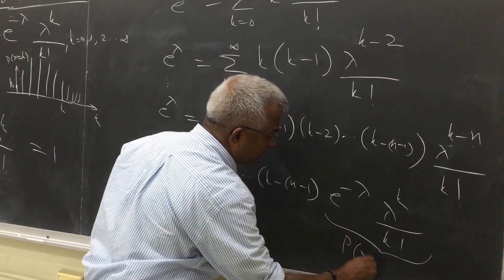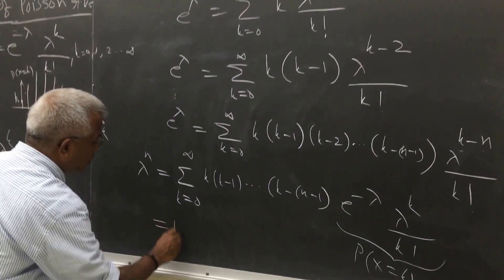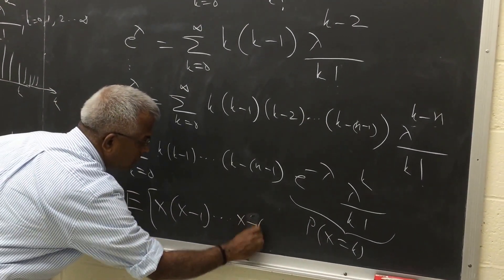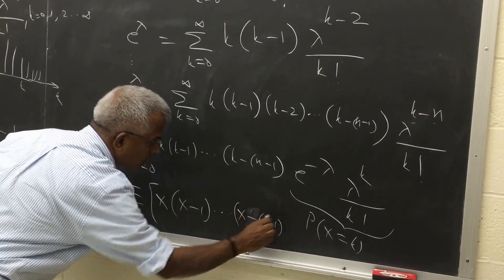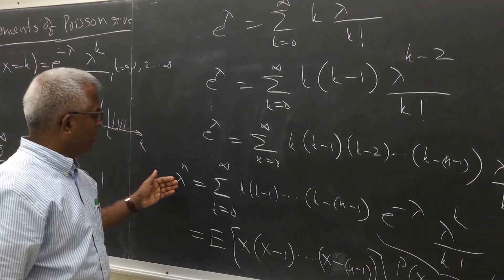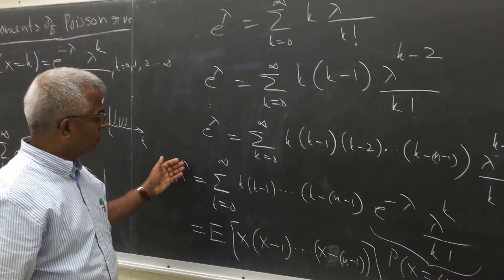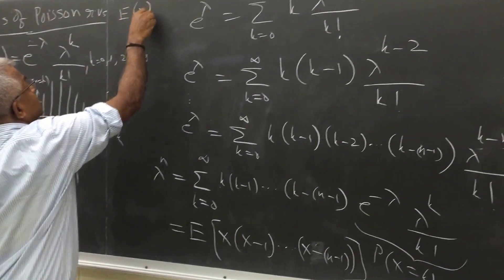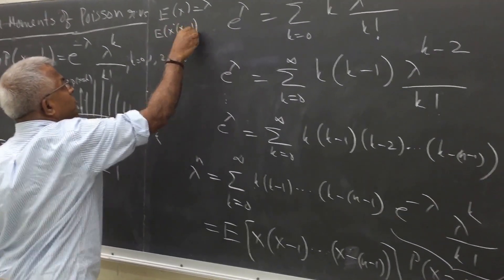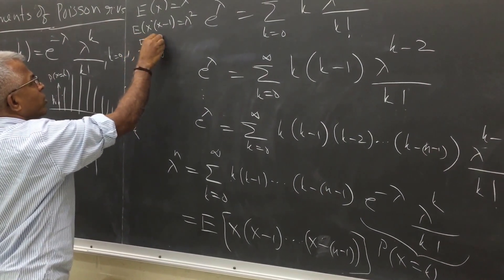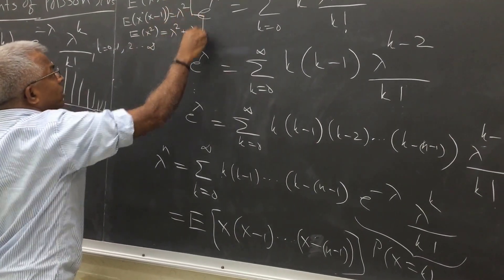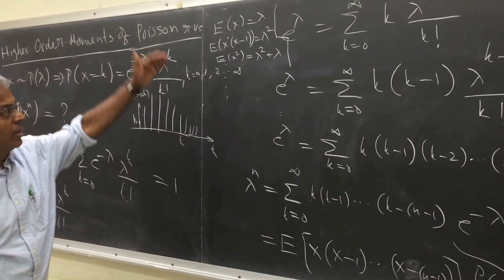Notice that e raised to minus lambda times lambda k over k factorial is just the probability of X equal to k. So the right-hand side is the expected value of X times (X minus 1) times ... times (X minus n plus 1). For n equal to 1, we get the expected value of X equal to lambda. For n equal to 2, we get the expected value of X(X minus 1) equal to lambda squared, so the expected value of X squared equals lambda squared plus expected value of X, which is lambda squared plus lambda. You can compute all higher order moments in this fashion.